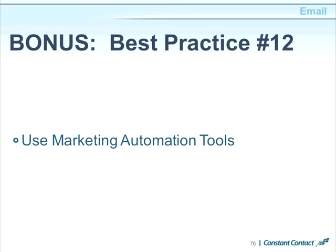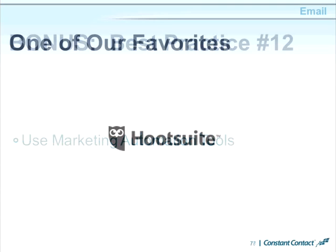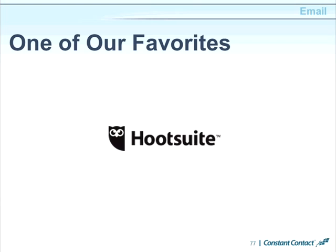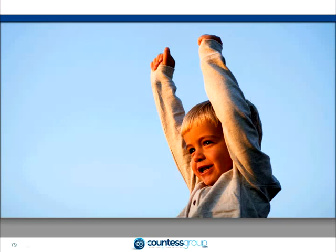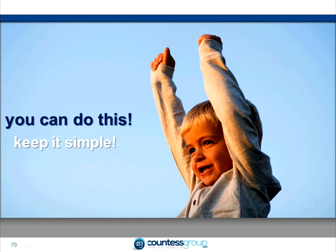Best practice number twelve: use marketing automation tools. One of our favorites is Hootsuite, which allows you to schedule posts to go out at pre-designated times, to as many channels as you want, up to a year in advance. The basic Hootsuite application is free. The bottom line on all of this — it may seem like you're drinking from the ocean, but you really can do this. Just keep it simple.